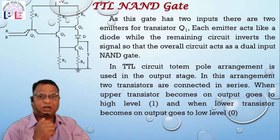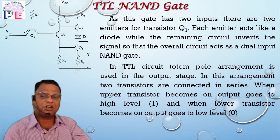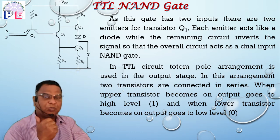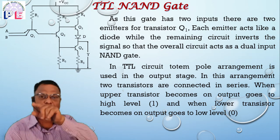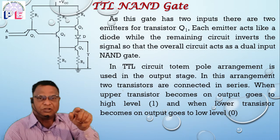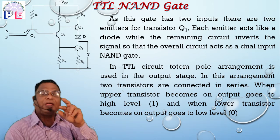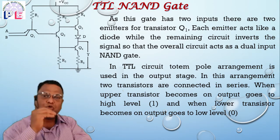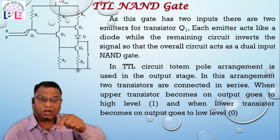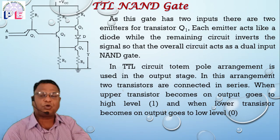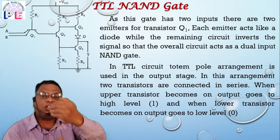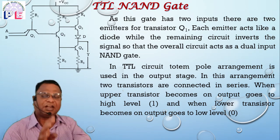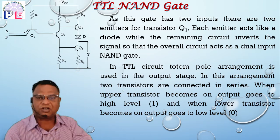When the upper transistor Q3 conducts, current flows through the transistor and diode and flows towards the output terminal, giving a high output. But when the upper transistor is in OFF condition and the lower transistor Q4 is in ON condition, the output goes to low level. The current then flows through the collector of transistor Q4. The diode is used to protect transistor Q3 from reverse current. That is the totem pole mode.